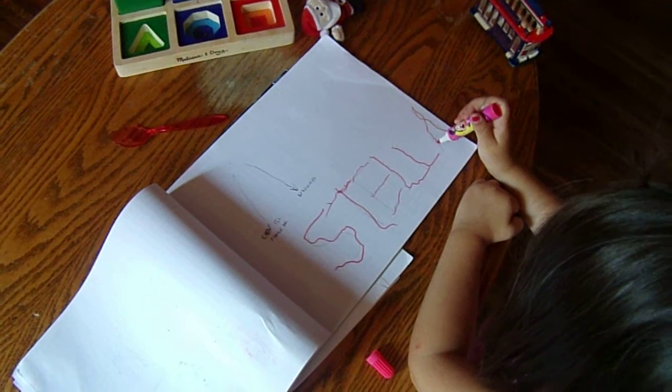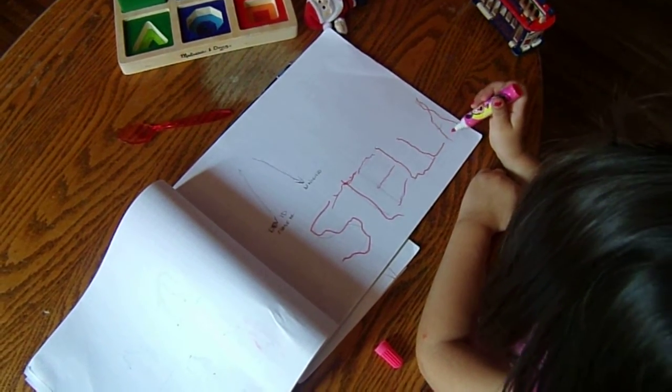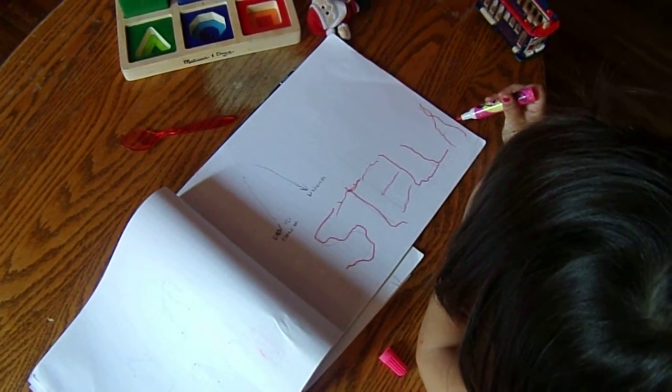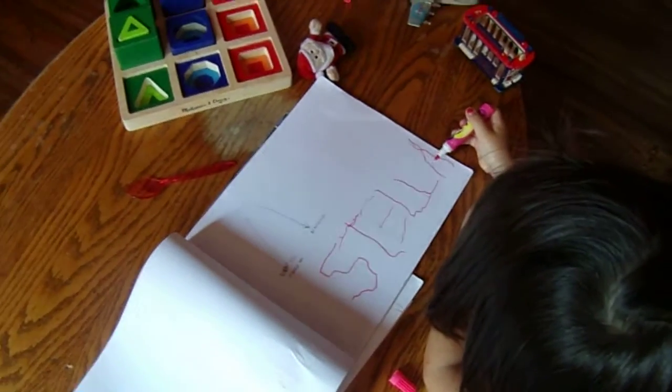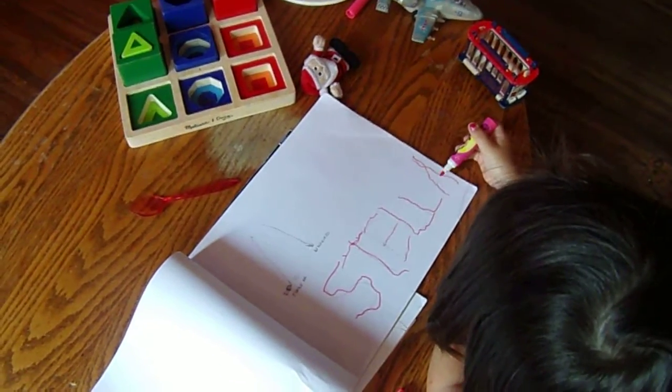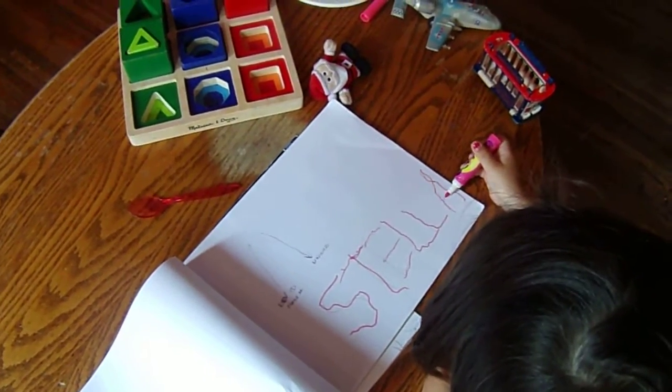I like that. Very good. Now there's a cross bar to the A. Can you do the cross bar? Yeah, that right there. It's a bridge. Yeah, it's like a bridge.